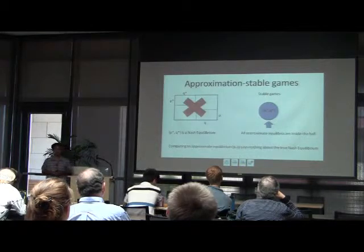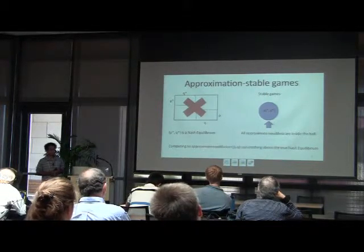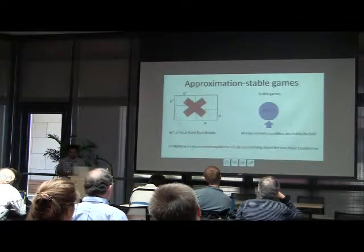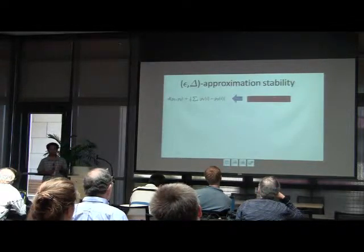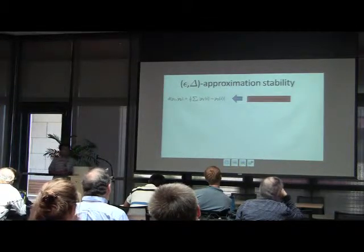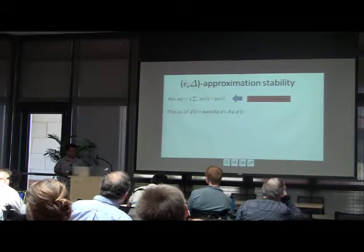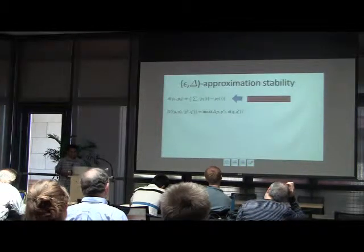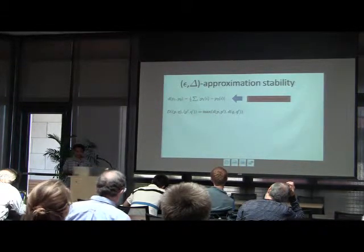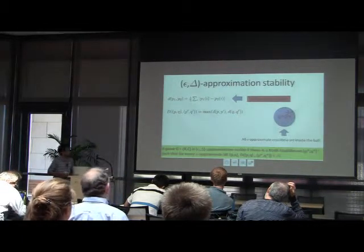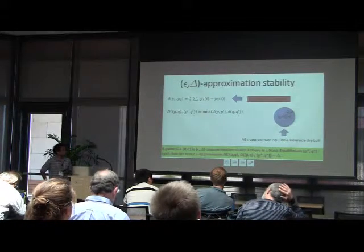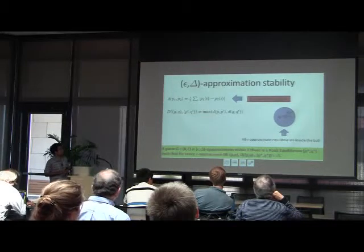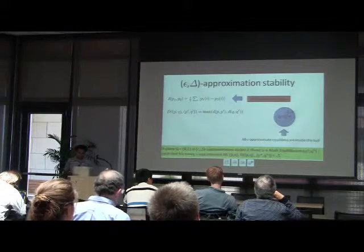We define a game as approximation stable if there is a true Nash equilibrium P-star Q-star and every approximate Nash equilibrium lies inside a small ball of radius around this true Nash equilibrium. More formally, we define the distance between two probability distributions P1 and P2 in terms of variation distance, and the distance between strategy pairs (P, Q) and (P', Q') as the maximum variation distance between P and P' and between Q and Q'. A game is epsilon-delta stable if there is a true Nash equilibrium P-star Q-star such that every epsilon approximate Nash equilibrium lies inside a ball of radius delta around it, measured in this D metric.